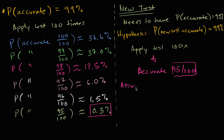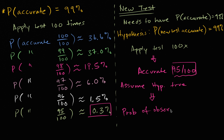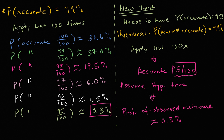So if you assume the hypothesis is true, the probability of the observed outcome is approximately 0.3%. Maybe it's possible you just got very, very unlikely results, but based on this, you probably should reject your hypothesis because the probability of getting this outcome if the hypothesis were true is very, very low.